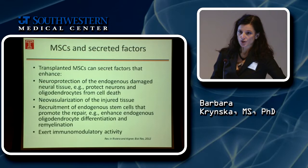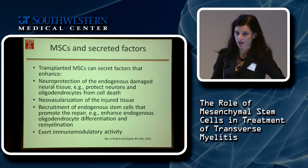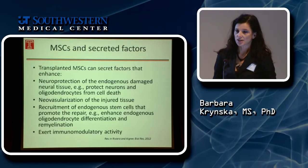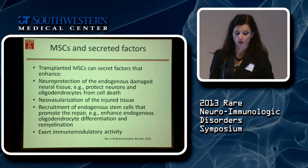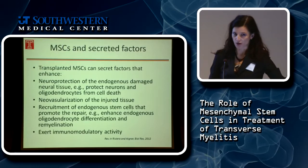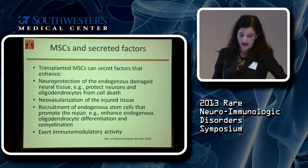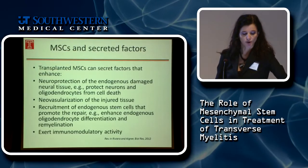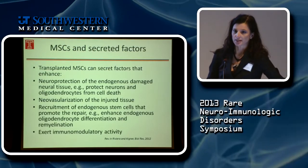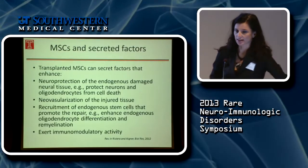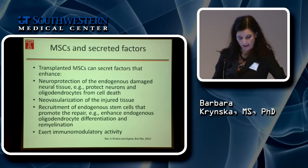Bone marrow cells secrete factors that can enhance neuroprotection of the endogenous damaged tissue, including the protection of neurons as well as oligodendrocytes from cell death — which is important for treatment of demyelinating diseases — and neovascularization of injured tissue. They can also recruit endogenous stem cells to the site of transplantation. In other words, transplanted mesenchymal stem cells secrete factors that attract endogenous stem cells to the site of injury, which can enhance regeneration. Their immunomodulatory activity, meaning they can modulate the activity of the immune system, is another important characteristic for treatment of immune-mediated diseases.